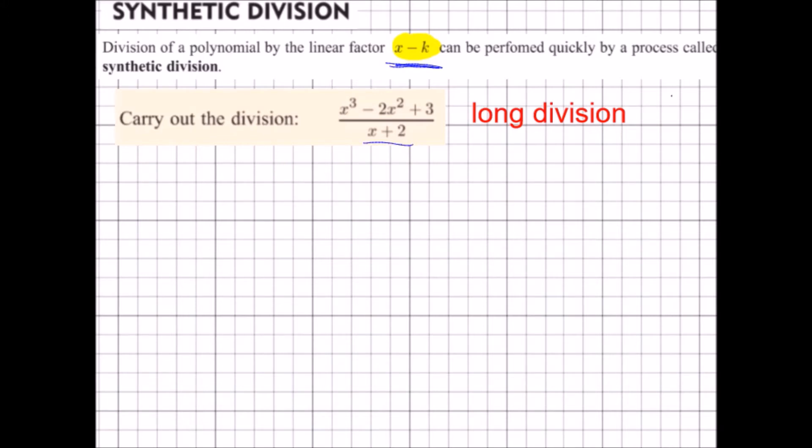First, however, I'll do this one by long division. For the coefficients, x plus 2 would be 1 and 2, and that is going into x cubed minus 2x squared. There's no x term here, so 0, and the constant term is 3.